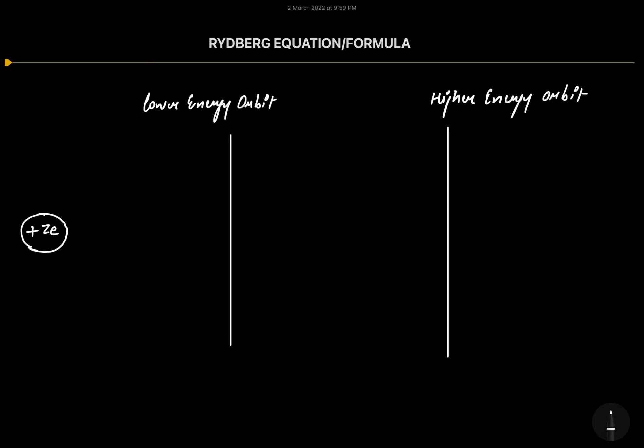What is emission spectrum? When an electron makes a transition from a higher energy orbit to a lower energy orbit, it will emit a photon. The photon obtained will strike a photographic plate to produce an impression, and that impression is called the emission spectrum.